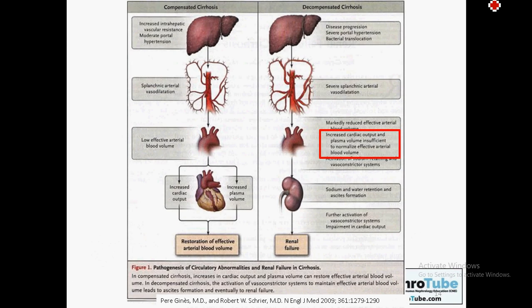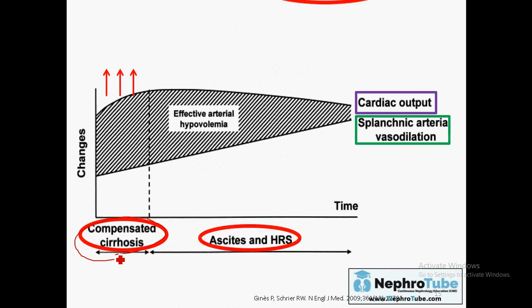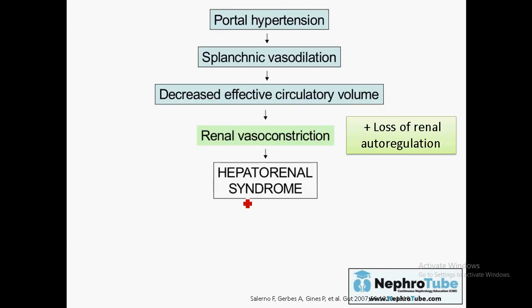A third factor causing renal hypoperfusion in hepatorenal patients: in advanced and decompensated cirrhosis there is decreased cardiac function. Early in compensated cirrhosis, cardiac output is increased to compensate for decreased effective circulatory volume. But with decompensated cirrhosis there is cirrhotic cardiomyopathy and decreased cardiac output, which further decreases kidney perfusion. So hepatorenal syndrome is produced by three factors: (1) renal vasoconstriction from RAAS/sympathetic/vasopressin activation, (2) loss of renal autoregulation, and (3) decreased cardiac output.